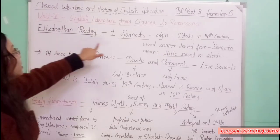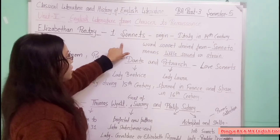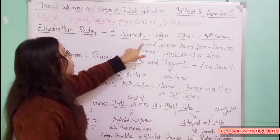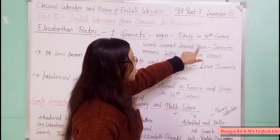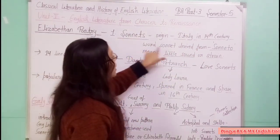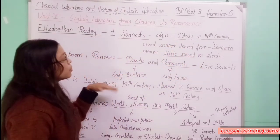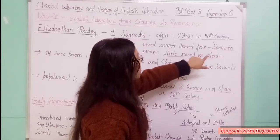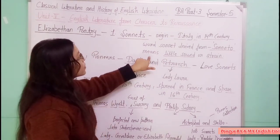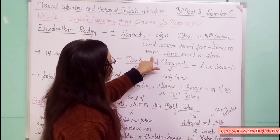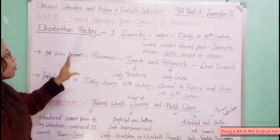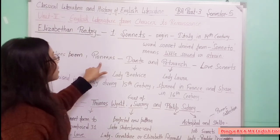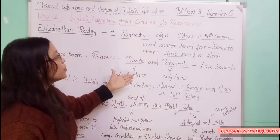So first of all, let's understand what a sonnet is. The origin of sonnets was from Italy in the 14th century. The word 'sonnet' is derived from the Italian word 'sonetto.' Sonetto's meanings are 'little sound' and 'strain.' A sonnet is a 14-line poem. These are the basic pieces of information related to the sonnet.